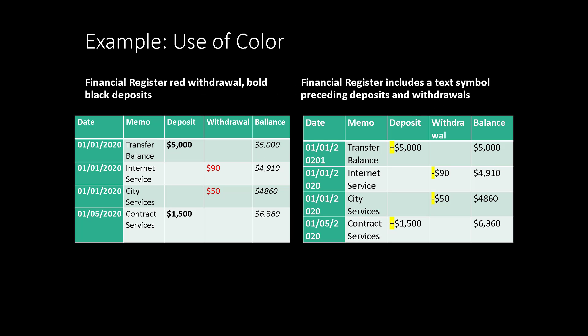An example of where we often utilize color to convey meaning is in the financial world, where red equals a negative balance or a withdrawal. I have two tables here. The one on the left shows a typical household or small business account balance with deposits and withdrawals. The deposits are in black and the withdrawals are in red. The table on the right enhances that further by including a plus sign in front of deposits and a minus sign in front of withdrawals.